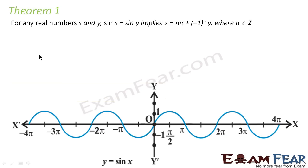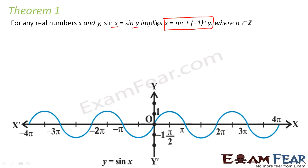Theorem 1: For any real numbers x and y, if sin x is equal to sin y, then x is equal to n·pi plus minus 1 to the power n, times y. Please note, we have to remember this.